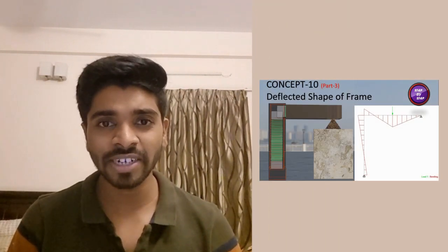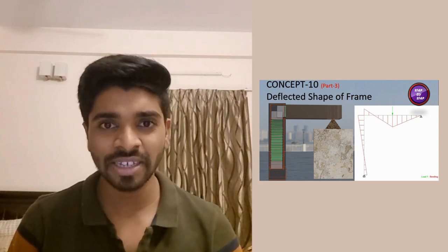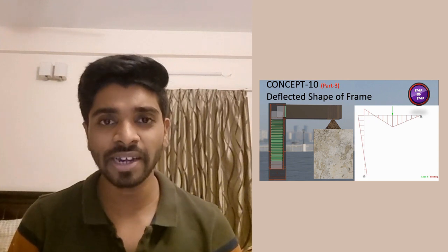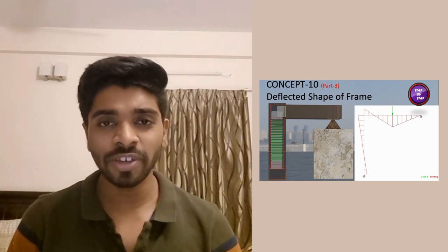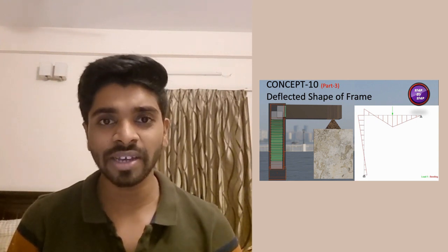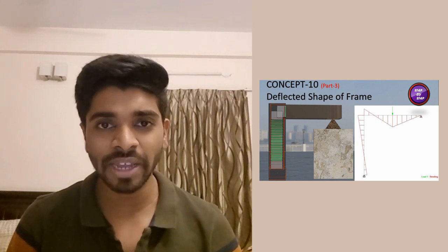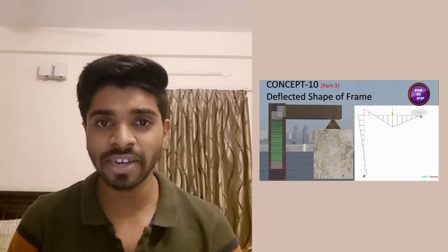Hello everyone, welcome back to my channel Step by Step. In the previous video we saw the deflected shape of a frame-like structure and one special rule to make the deflected shape at a beam column joint. If we know that rule, then we can make the deflected shape of any frame-like structure very correctly.